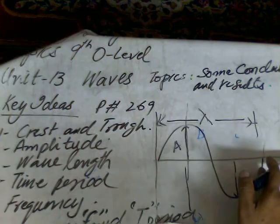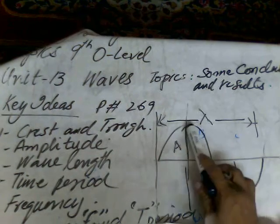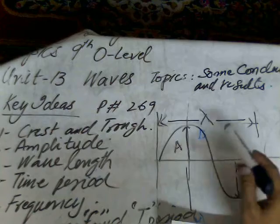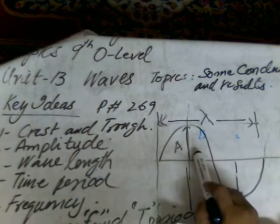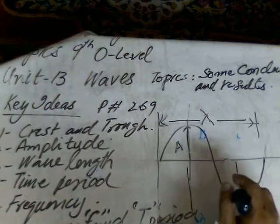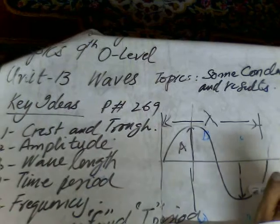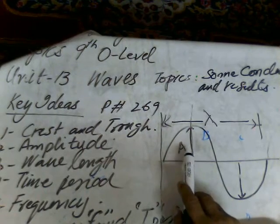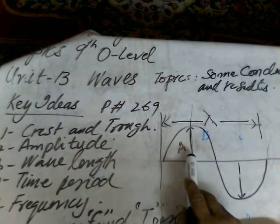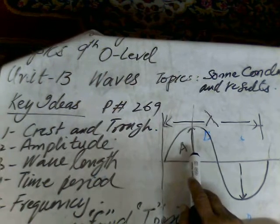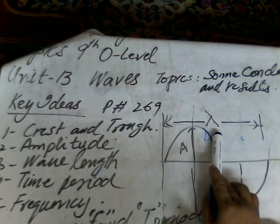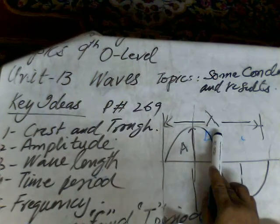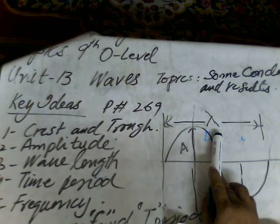It is also defined as the distance between the two maximum height points, between two consecutive crests or two consecutive troughs. It is called wavelength and it is represented by lambda, and its SI unit is meter.